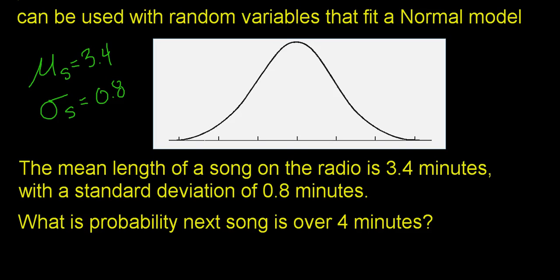The mean length of a song on the radio is 3.4 minutes with a standard deviation of 0.8. On the normal model, 3.4 is in the center. Going up by 0.8 gives 4.2, then 5.0, then 5.8. Going down gives 2.6, 1.8, and 1.0. So it would be very unusual for a song to be shorter than 1 minute or longer than 5.8 minutes.